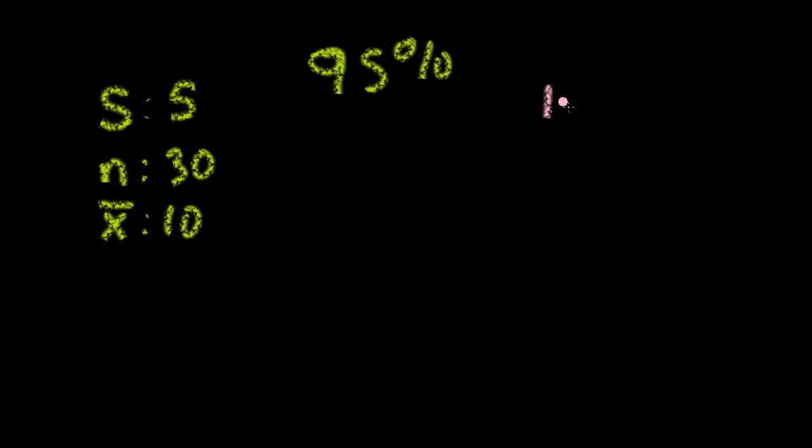We will be using the formula t multiply the standard deviation of the sample, divided by the square root of our sample size. All of this will give you the margin of error.